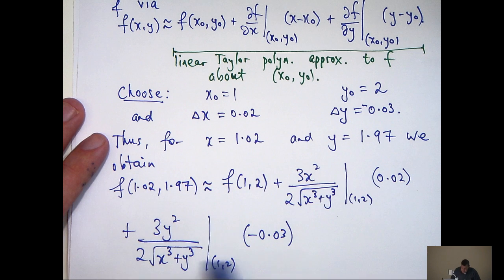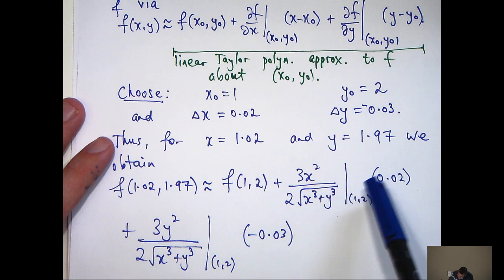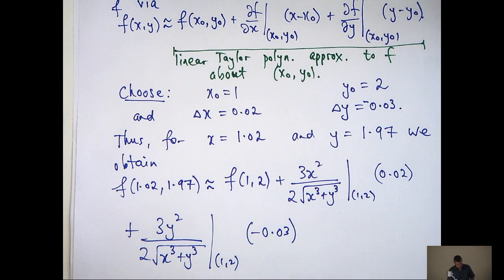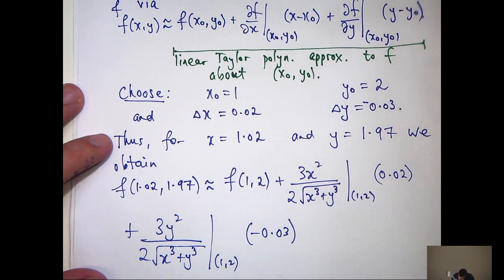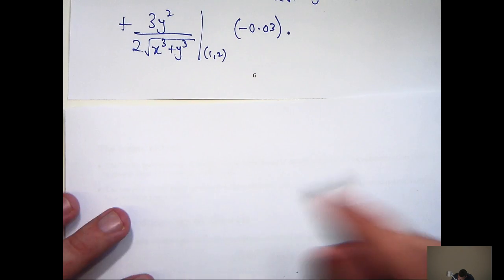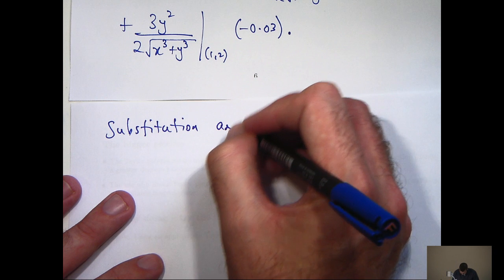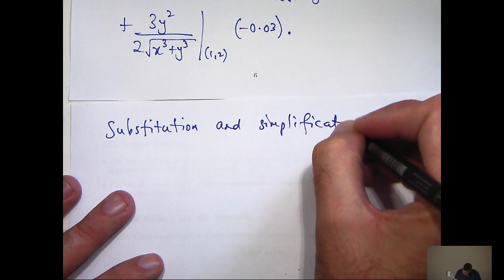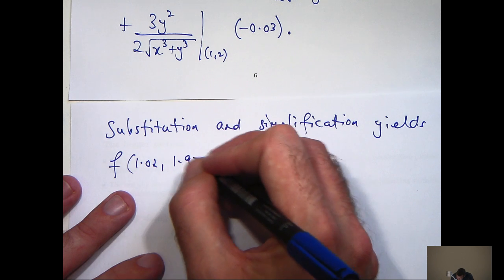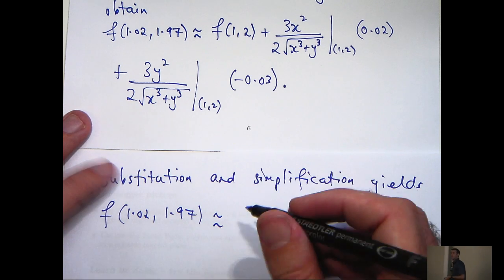So now I've got to clean this up. First of all, I'm going to substitute in x0 equals 1, y0 equals 2 in here and here, and then I've just got some simple calculations to do. So let's see if we can clean this up a bit. So substitution and simplification yields the following.